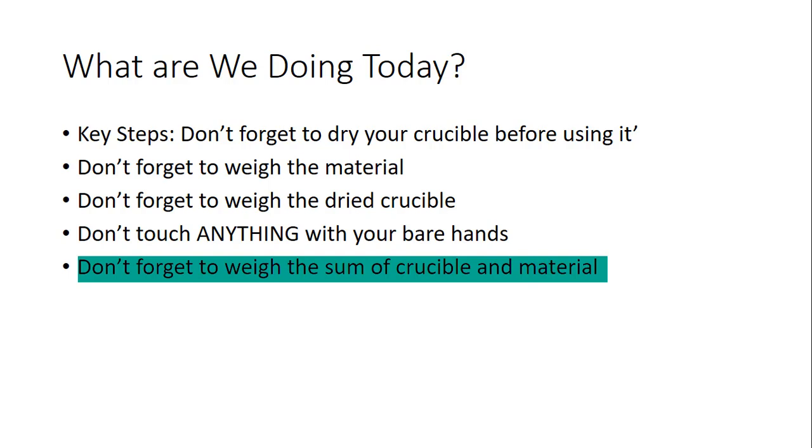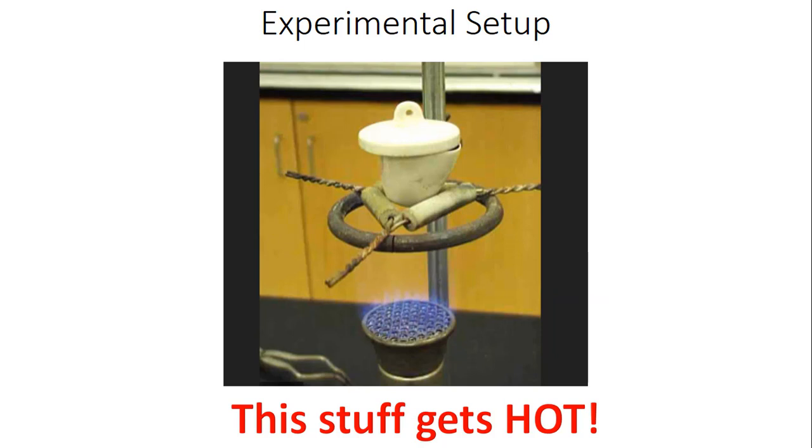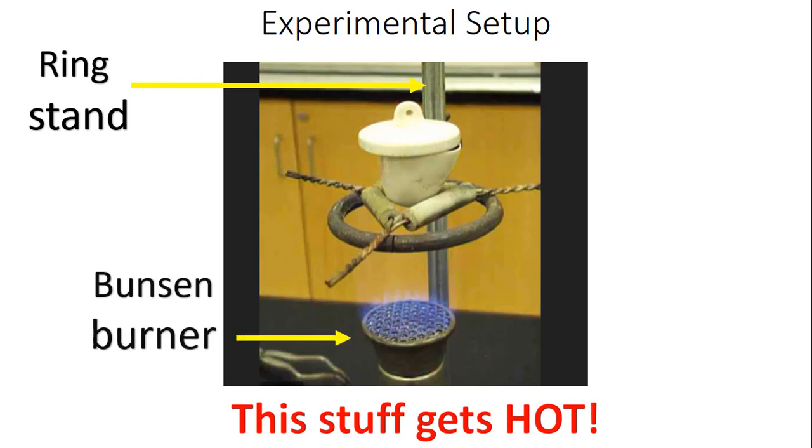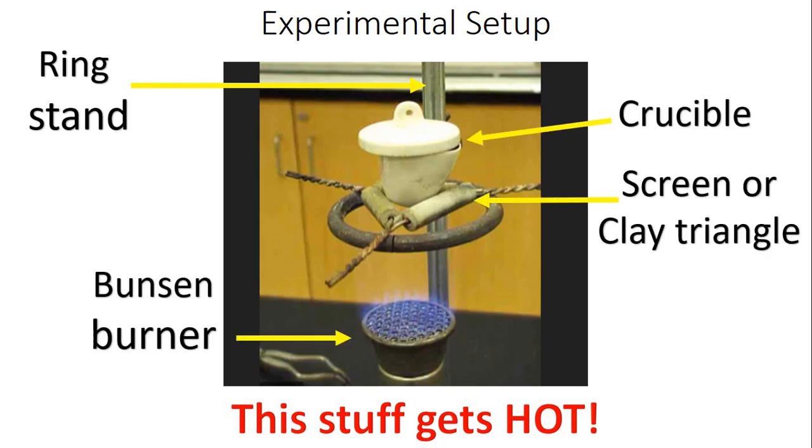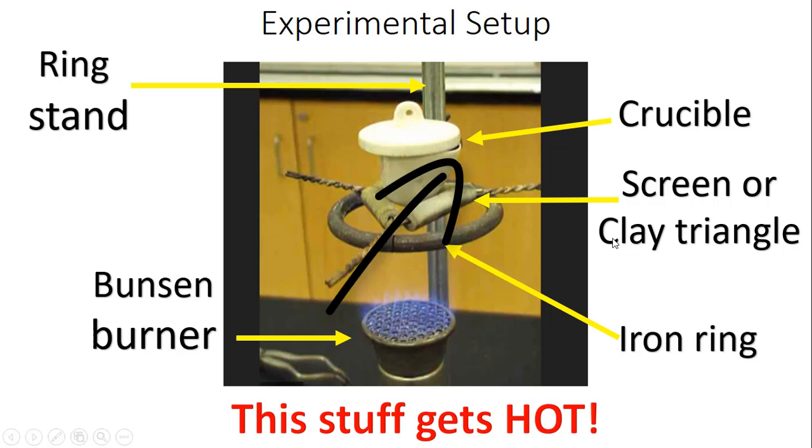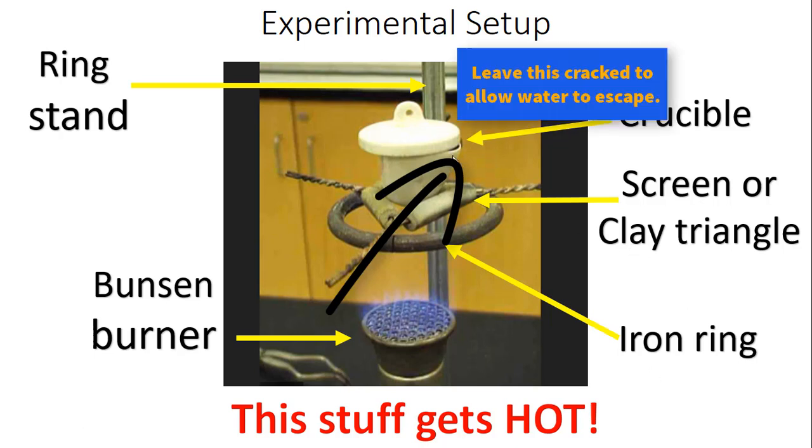Here's the experimental setup and this stuff as I said earlier gets really hot. Here's your ring stand, the Bunsen burner, the crucible. You're going to need a clay triangle or a screen and an iron ring, and this is the basic setup to do gravimetric analysis. If you'll notice the crucible, if you look at the lid on the crucible here, it has a little bit of a gap in it.